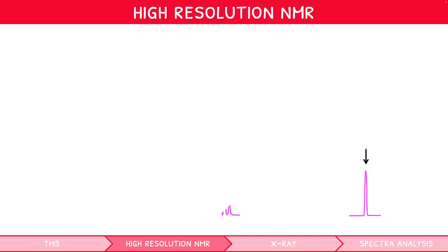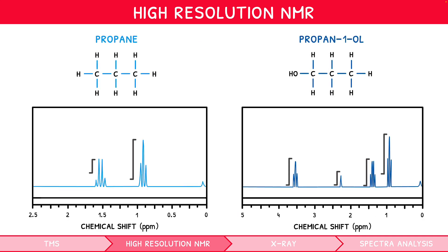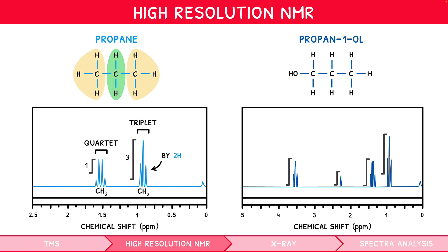Let's put this into context using our previous two spectra for propane and propan-1-ol. For propane, we previously identified the rightmost peak as the CH₃ environment and the left as the CH₂, since they express a ratio of 3:1 when analysing the integration trace. We can see the CH₃ peak has three split peaks, i.e. is a triplet, indicating its adjacent environment contains three protons — this fits, as each CH₃ is adjacent to a CH₂. Furthermore, the CH₂ peak has four split peaks, i.e. is a quartet, indicating its adjacent environment contains three protons — this fits, as it is adjacent to a CH₃ in either direction.